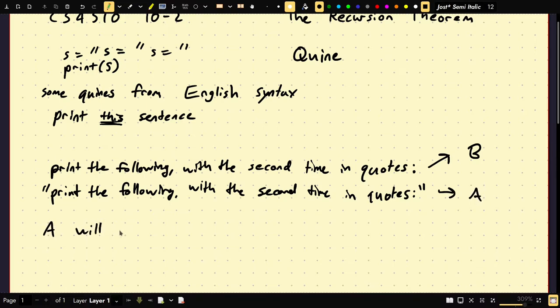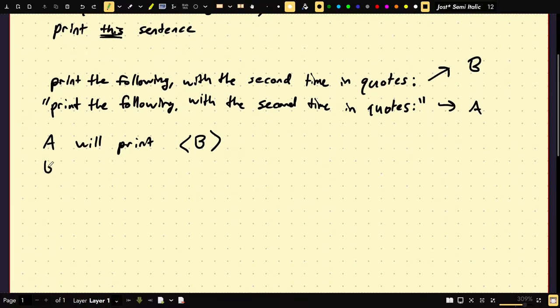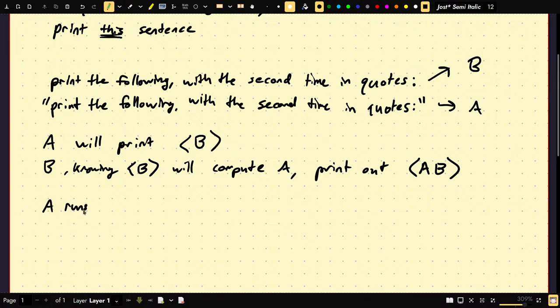So let's call this A. So A will print a B. A B knowing the encoding of itself, which A leaves on the tape, will compute A and print out the encoding of A and the encoding of B. So A is going to run first, hand off the process to B. B is going to then compute A, then it has B and A, it's going to compute A, B. So it's going to compute its own encoding this way. So A runs first.